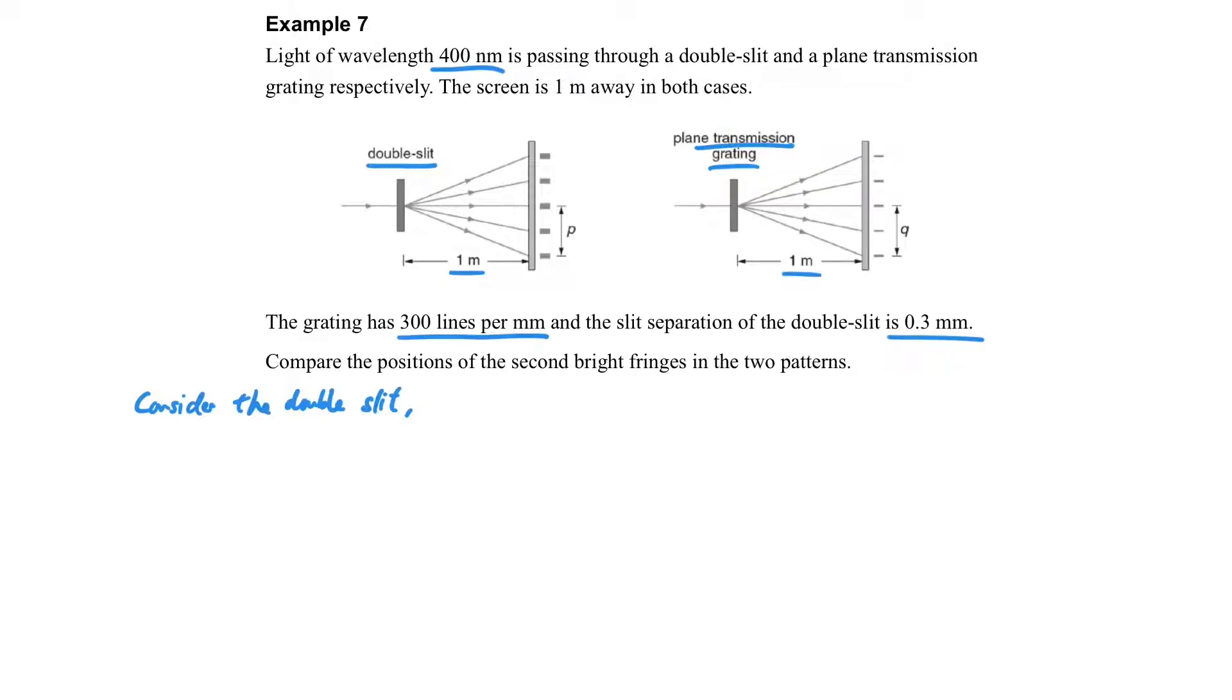So let's consider the double-slit first. For the double-slit, we have the double-slit equation: delta y equals lambda d over a. So we can substitute the values here and we can find the distance p marked on the figure, which is 2 delta y, the position of the second bright fringe.